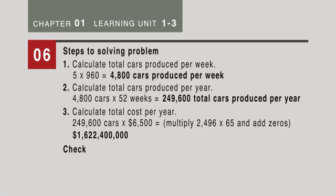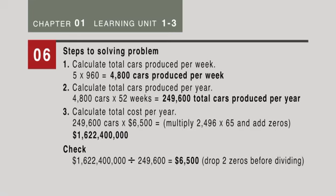We can check by taking $1,622,400,000—if I made a mistake before, remember that 622 should be millions, not thousands. The 400,000 represents the thousands. When we divide by 249,600, it does come back to our $6,500. Keep in mind, everybody makes mistakes, so don't laugh at me too much.